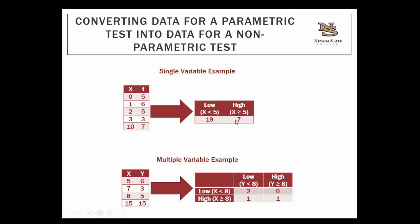So we would want to get rid of the variability by converting this raw data into frequency-based data for a non-parametric test. You could categorize this: anybody with a score less than 5 is on the low end, and anybody with a score greater than or equal to 5 is on the high end. You would count how many people have a score less than 5 — that would be 5 plus 6 is 11, plus 5 is 16, plus 3 is 19. So 19 people have a score less than 5. For high scores, how many people have a score greater than or equal to 5? The score of 10 is the only score greater than or equal to 5, and there are 7 people with that score. Now you have data that's ready for a chi-square test of goodness of fit.